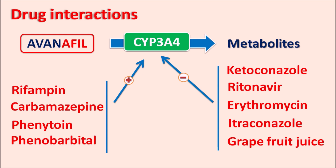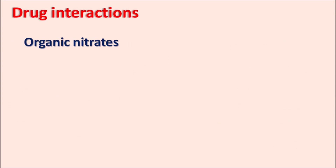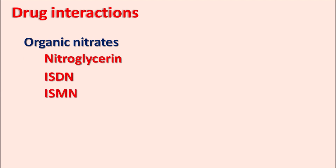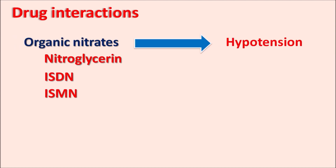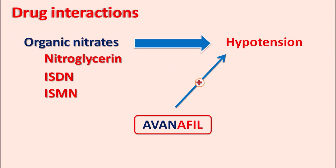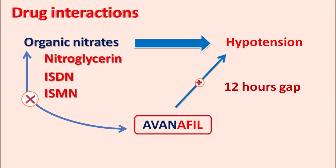These drug interactions should be thoroughly checked when avanafil is co-administered with these drugs. Another important drug interaction is observed with organic nitrates such as nitroglycerin, isosorbide dinitrate, and isosorbide mononitrate — drugs used to treat angina. These drugs increase the release of nitric oxide, producing hypotension, and avanafil can also produce hypotension. A 12-hour gap should be maintained between avanafil and organic nitrates, as co-administration is contraindicated.